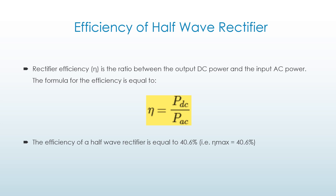The efficiency of a half wave rectifier is equal to 40.6%. It means eta maximum is equal to 40.6% for the half wave rectifier.